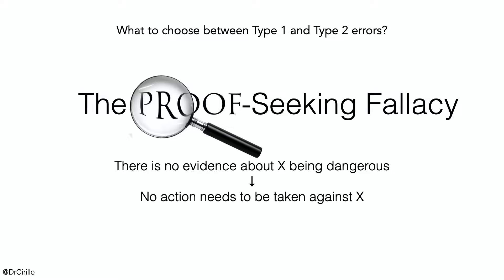Type 1 and type 2 errors are very important. When you are performing a test, you are interested in the significance level, the power of the test, and all the relative quantities. One fallacy connected to this type of reasoning is the proof-seeking fallacy, which also connects to a common saying that the absence of evidence should not be an evidence of absence. If there is no evidence about something being dangerous, then no action needs to be taken — this is an extremely common fallacy. Think about false negatives in statistical testing: we do not see an effect that actually exists. Being precocious is always a clever choice in front of this type of uncertainty.